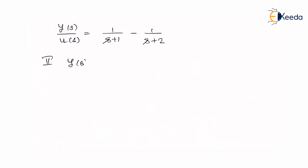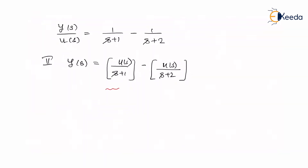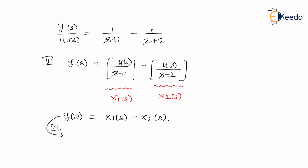Step number two: take y(s) and transfer u(s) to the right-hand side. That becomes y(s) = [1 upon (s+1)] × u(s) minus [1 upon (s+2)] × u(s). I am going to consider the first expression as x1(s) and the second expression as x2(s). So y(s) = x1(s) − x2(s). Taking the inverse Laplace transform gives y = x1 − x2. This is an important equation.